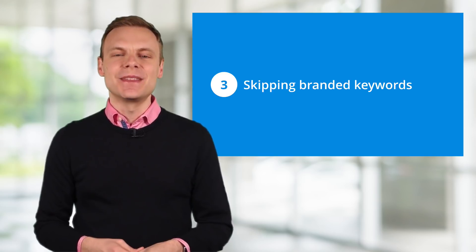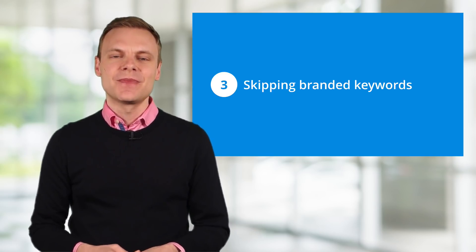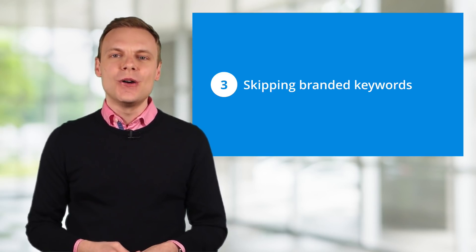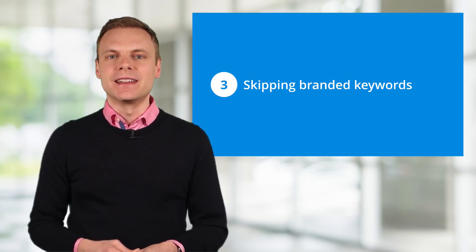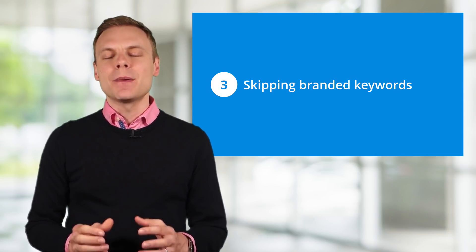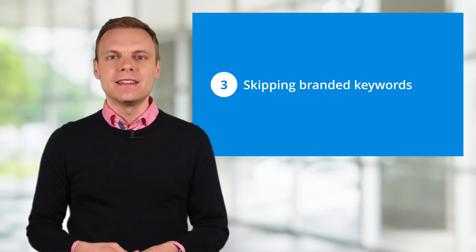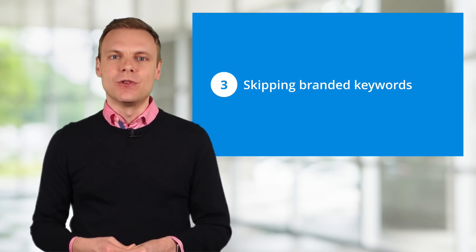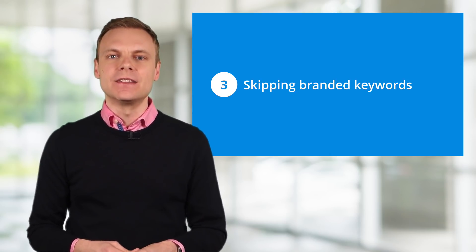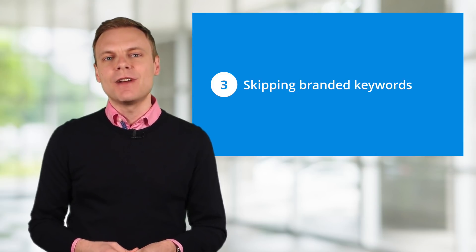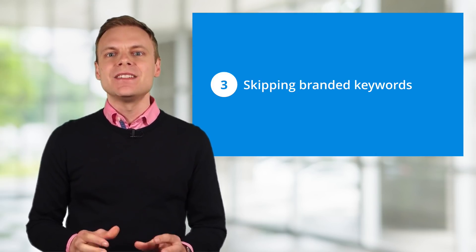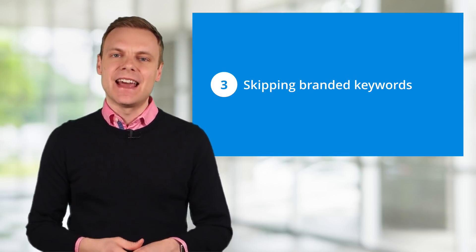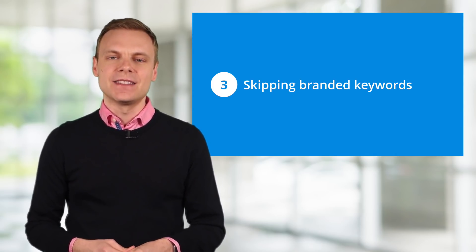Mistake number 3 is skipping the use of branded keywords. I've found that bidding on your own branded terms is the cheapest traffic you can acquire from AdWords. But it's not just about cost, it's also about visibility and conversions. Having a paid ad along with your organic listing on search results will lead to more clicks. Google and Bing have both done studies on incremental clicks and found that running ads on branded terms will increase your traffic. And since you get to control the message and the landing page, you'll also see higher conversion rates.